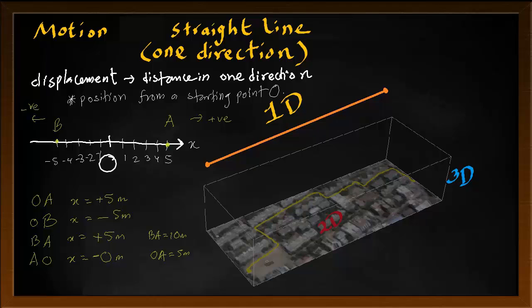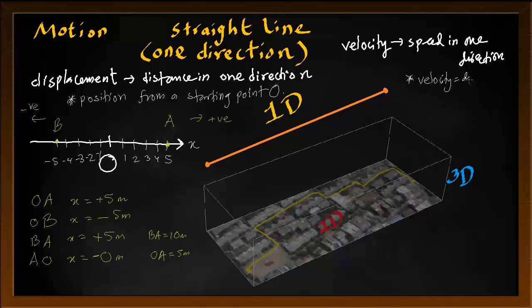The next term we have to talk about is velocity. Velocity is speed in one direction. Our working definition is: velocity is displacement over time. Just like displacement, the value of velocity can be negative or positive depending on which direction it is going. So if speed is constant but direction is changing, we can say that velocity is changing. Moving from A to B gives a negative velocity; from B to A gives a positive velocity. Speed always has a positive value, but velocity can be positive or negative.